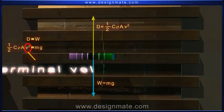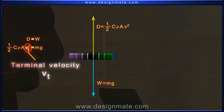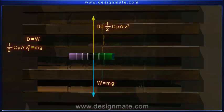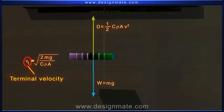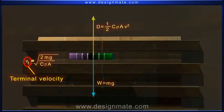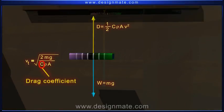This constant velocity attained by the object under free-fall condition is called terminal velocity. Its mathematical expression is given as Vt equals square root of 2mg over c rho a, where c is the drag coefficient.